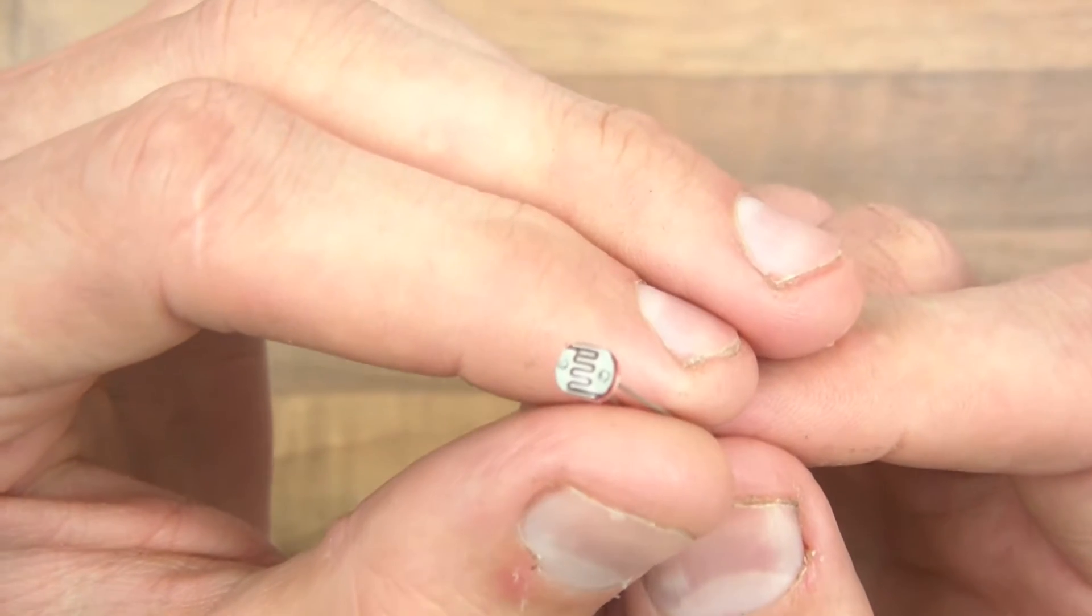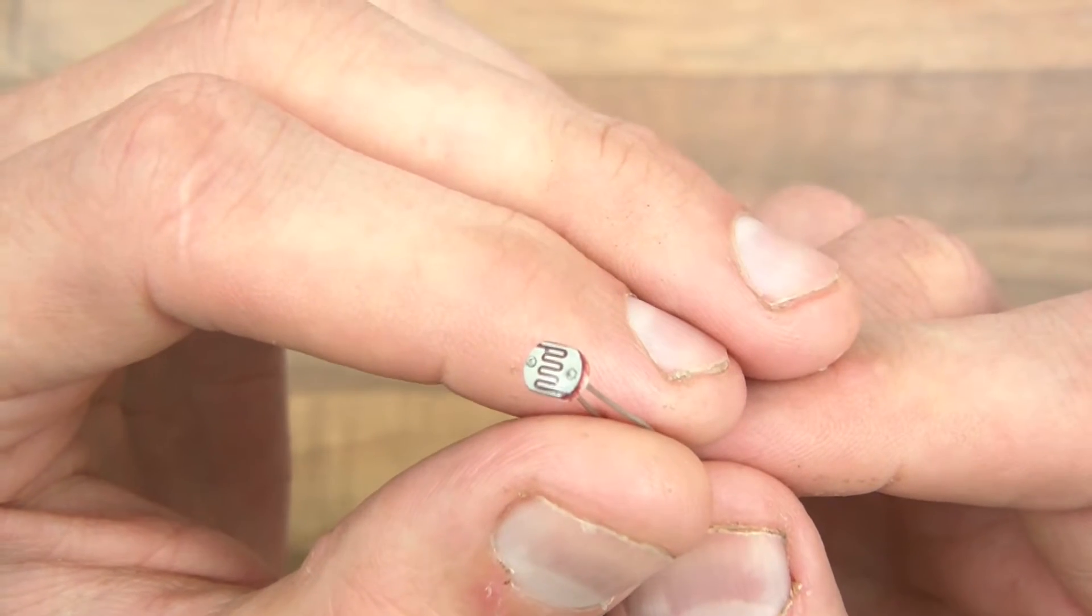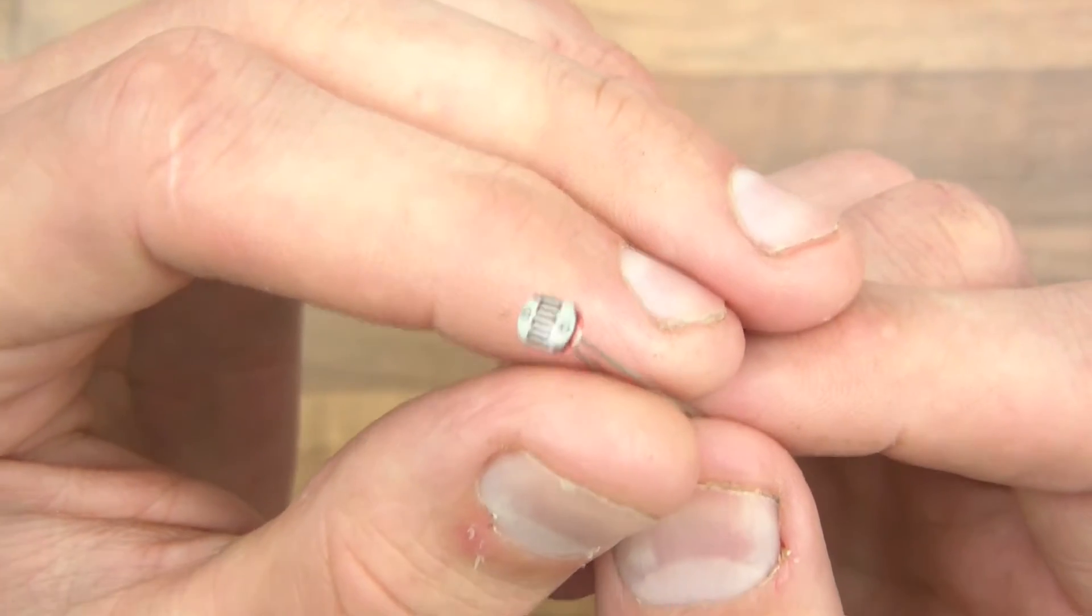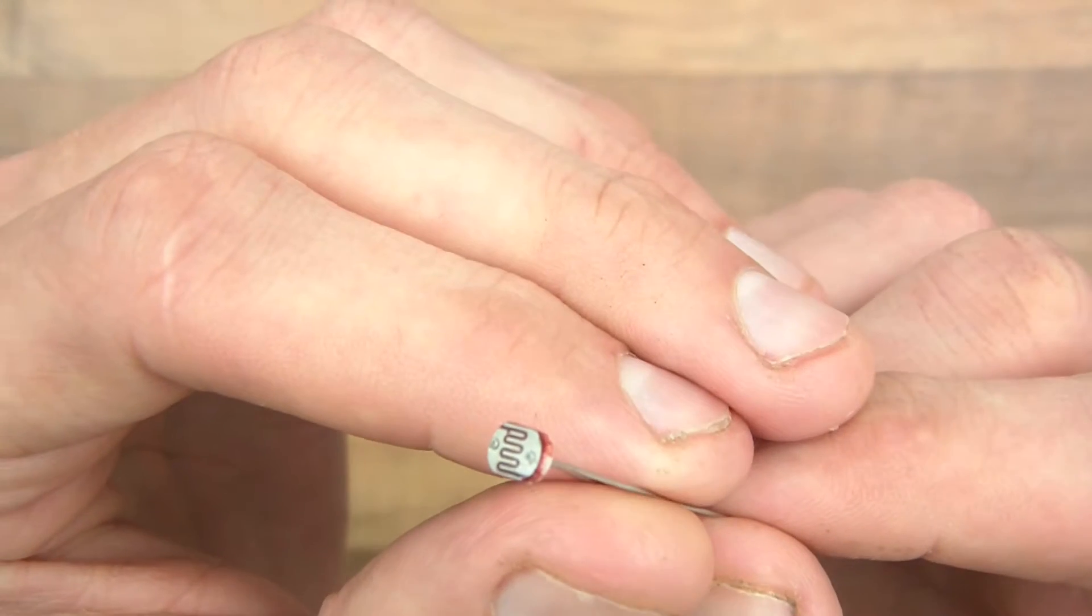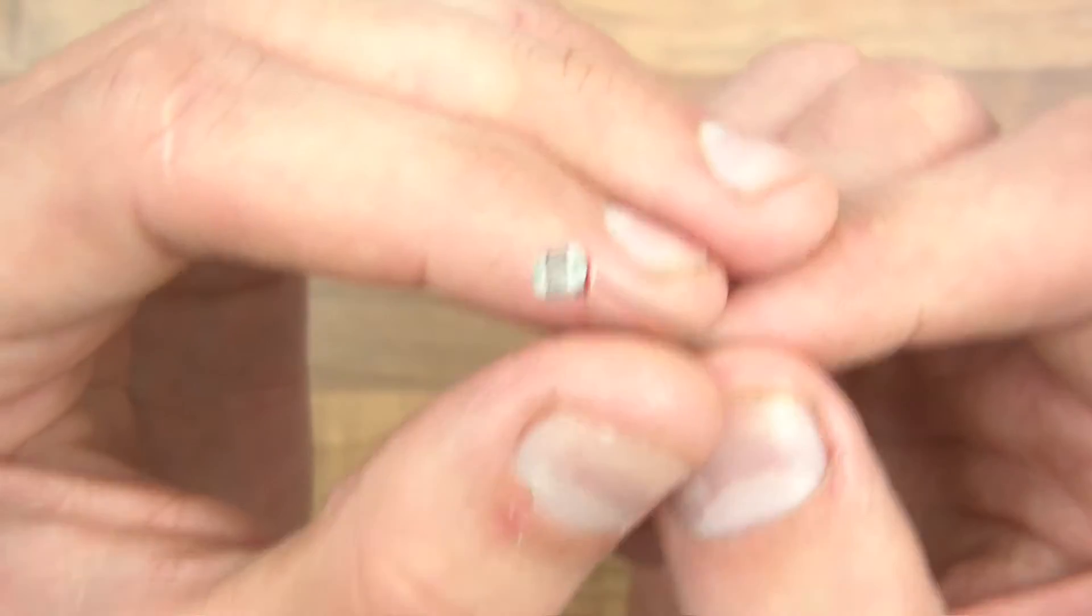So an LDR is a light dependent resistor and it is just that, a resistor. Try not to get confused with sensors because although you can use these as sensors, it's not really a sensor, it's a resistor. You can get light sensors and they are way better but they are not resistors and this is a resistor.